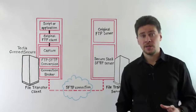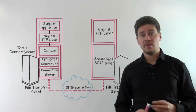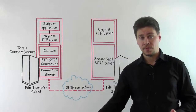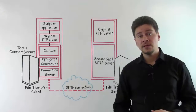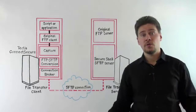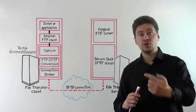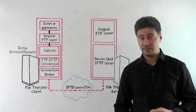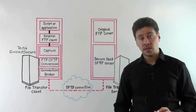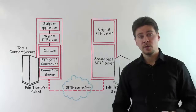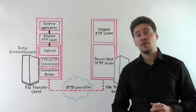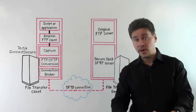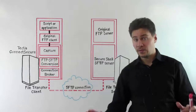The first challenge that the customer had was that they were sending unencrypted FTP traffic over the network. Because of recent changes in the regulations, the customer was forced to somehow secure that FTP traffic. So the customer installed our Connect Secure product on their systems, and then Connect Secure was converting FTP to SFTP transparently on the fly.